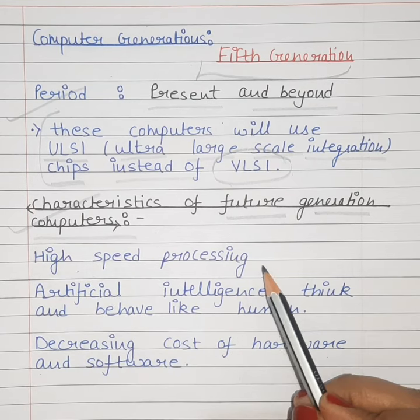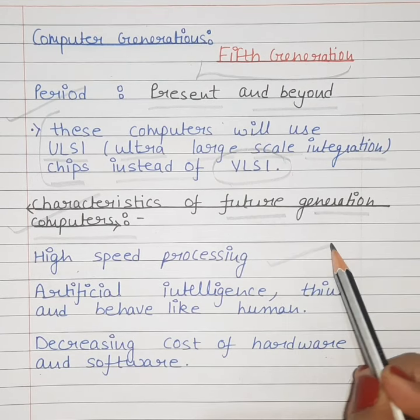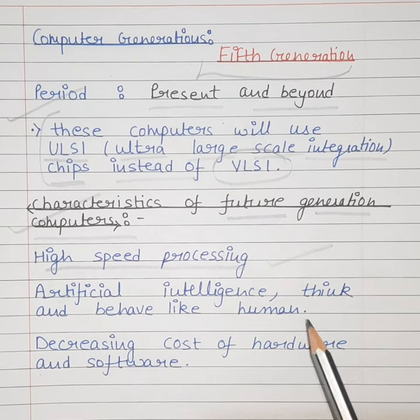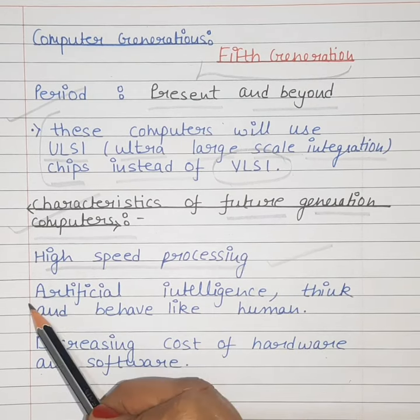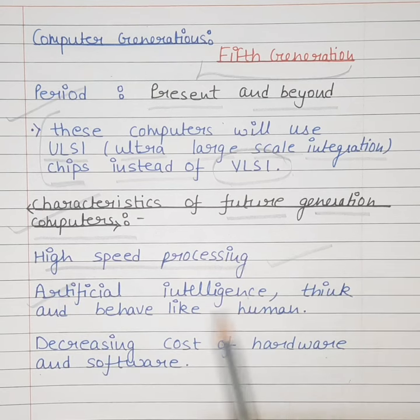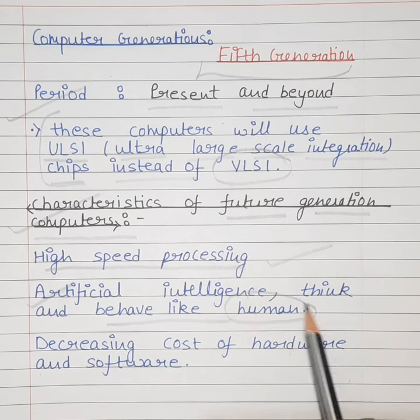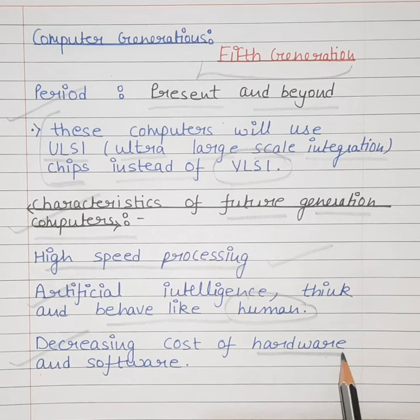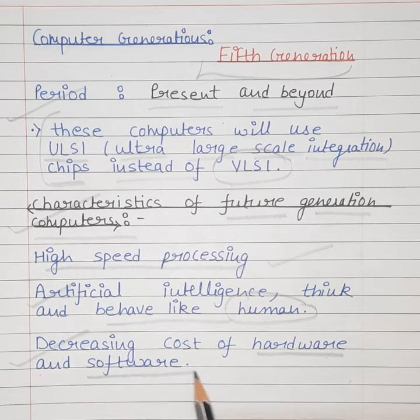First is high speed processing. Next is artificial intelligence — the ability to think and behave like humans. Next is decreasing cost of hardware and software.